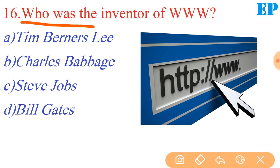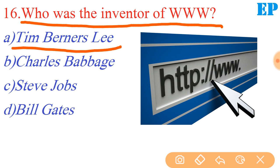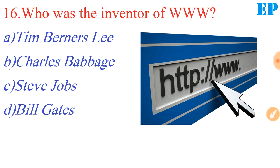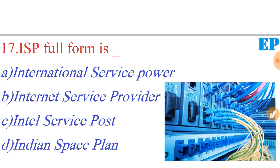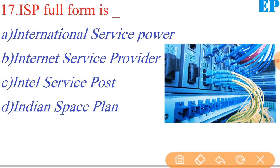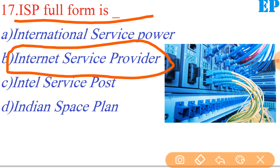Who was the inventor of WWW? WWW full form is World Wide Web. WWW was created in 1990. Next question: ISP full form is what? ISP full form is Internet Service Provider. Internet Service Provider is ISP.